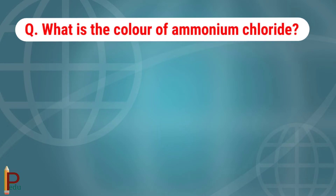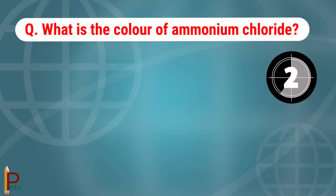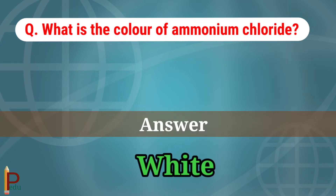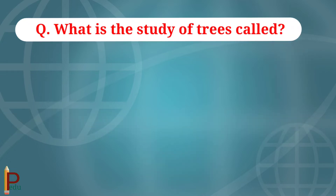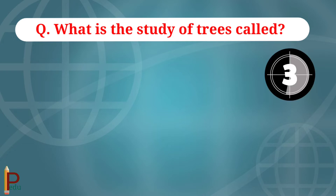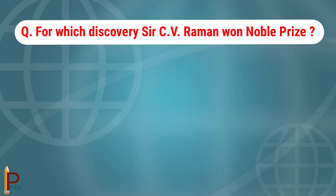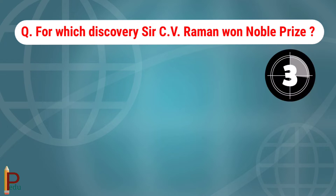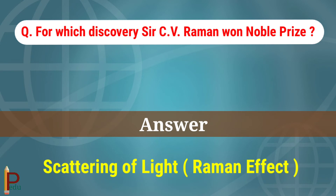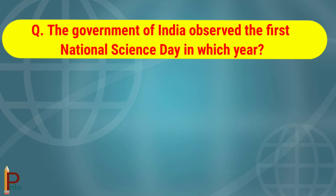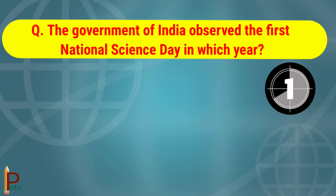What is the color of ammonium chloride? The answer is white. What is the study of trees called? The answer is dendrology. For which discovery did Sir C.V. Raman win the Nobel Prize? The answer is scattering of light.